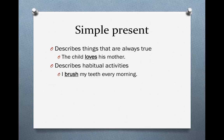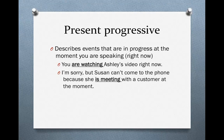The simple present can also describe habitual activities — things that you do on a regular basis: every day, every week, once a month, any kind of habitual activity. For instance, I brush my teeth every morning. Simple present. The present progressive, on the other hand, describes events that are in progress at the moment you are speaking — in other words, right now.